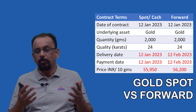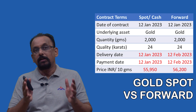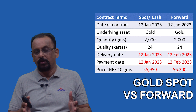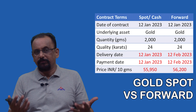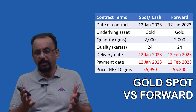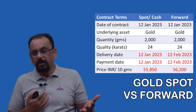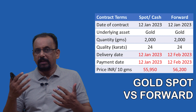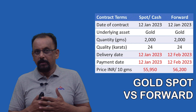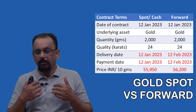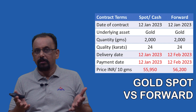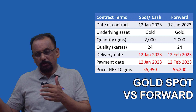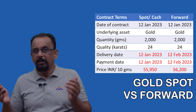Now let's look at the same buyer looking to buy gold, 24 carat, same quantity of 2 kg or 2000 grams, but he wants delivery on 12th February — that is one month from 12th January. He discusses with the seller, and obviously they cannot transact at the spot rate applicable that day. They work out a negotiated rate which both find agreeable — let's say 56,200 rupees per 10 grams — since both expect the gold price to go up a little in the next month. So the contract is entered into on 12th January 2023: the buyer is buying gold, 24 carat, 2 kg, at 56,200 rupees per 10 grams, with delivery on 12th February 2023 and payment also made on the same day. This is an example of a forward contract.